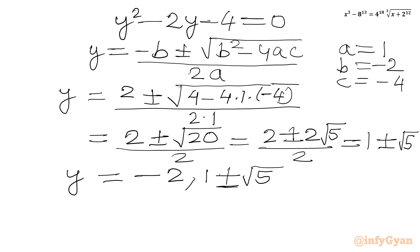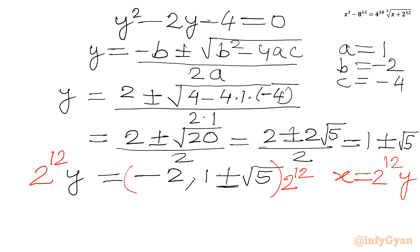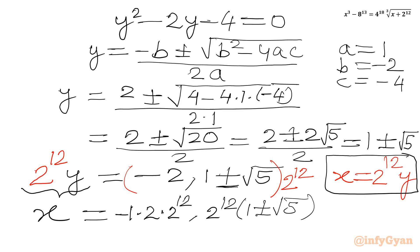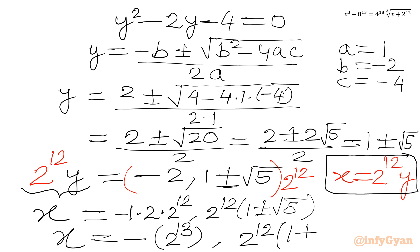Now we multiply both sides by 2^12, since our substitution was x = 2^12 · y. So the final values of x are: x = −2^13 (from y = −2, since 2^12 × (−2) = −2^13), x = 2^12(1 + √5), and x = 2^12(1 − √5). This is our final answer.